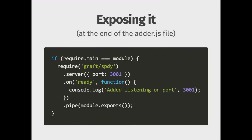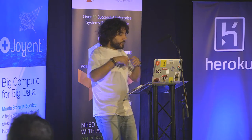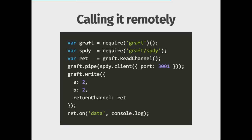How can we export the service? Very easy. We require graft/speedy, open a server, and when it's ready we pipe to the module.exports of the other JS file. The channel and session end up as non-enumerable properties on the message object. When you receive a request, you get an underscore_channel and underscore_session, where you can put authentication and all that kind of stuff. We can also call the service remotely — it's actually the same example as before, gives the same output. Instead of requiring the service locally, we just pipe to a Speedy client and get back the result.